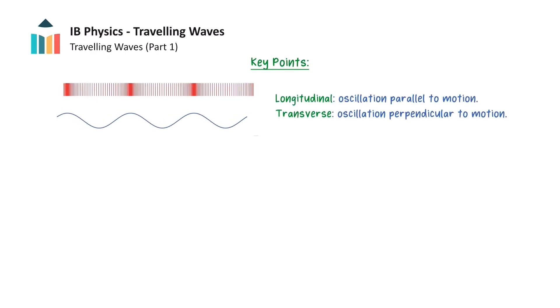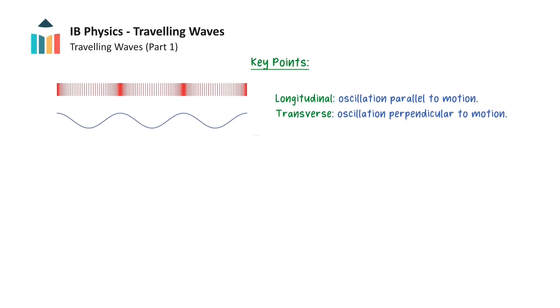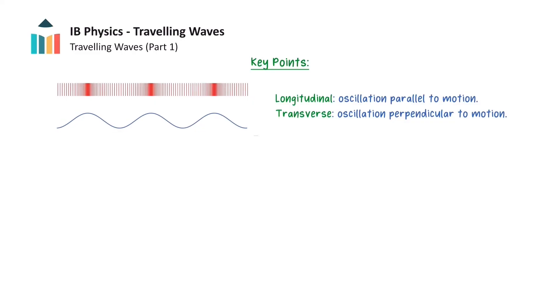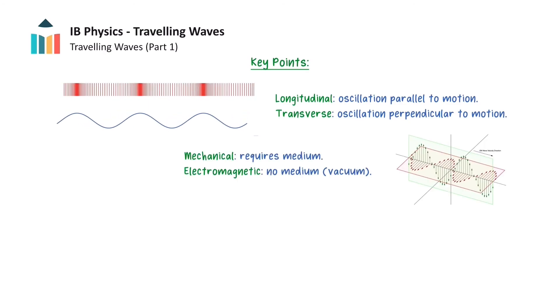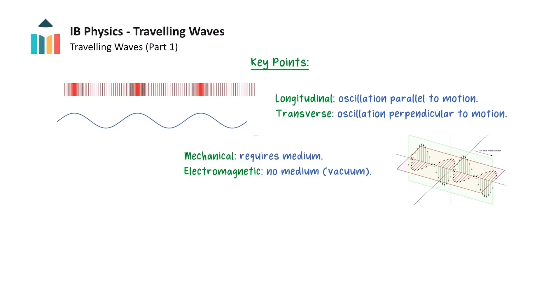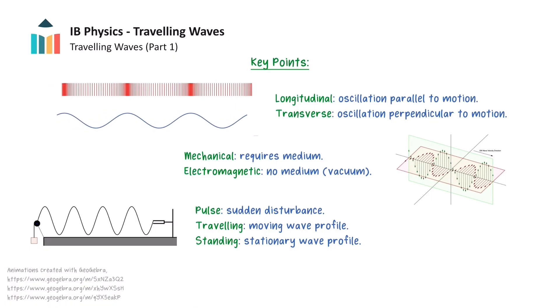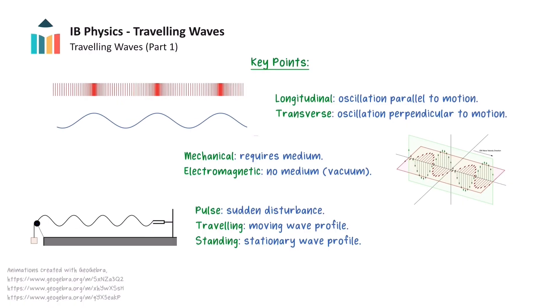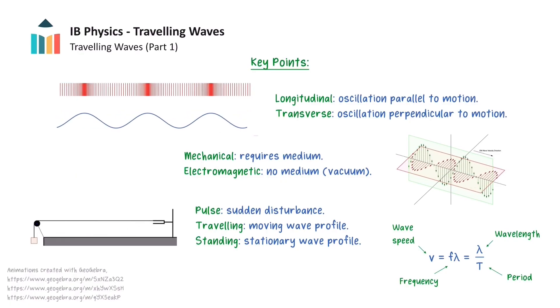This wraps up our introduction into waves and wave motion. We will now provide a final summary of the key understandings from this video. This video explored various ways of categorising waves. If the particles of the medium oscillated parallel to the direction of wave motion, these are known as longitudinal waves. But if the particles of the medium oscillated perpendicular to the direction of wave motion, then these were classified as transverse waves. Mechanical waves are incapable of transferring energy through a vacuum and require a medium to move. Meanwhile, electromagnetic waves are capable of transferring energy through a vacuum. A wave pulse is the result of a sudden disturbance in the medium. A travelling wave has a moving wave profile, and a standing wave has a stationary wave profile. In addition, properties of waves were discussed, some of which are related to each other by this equation.